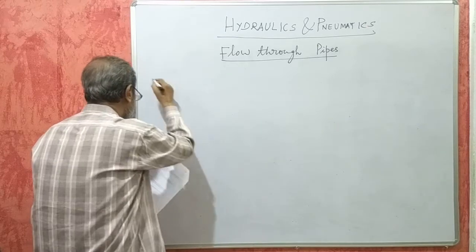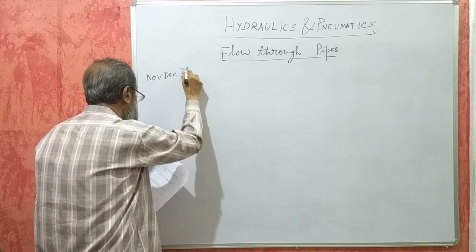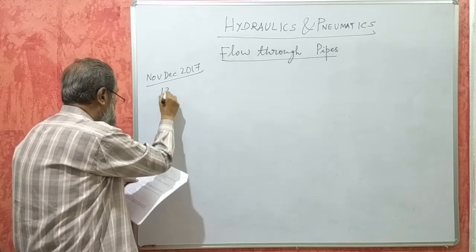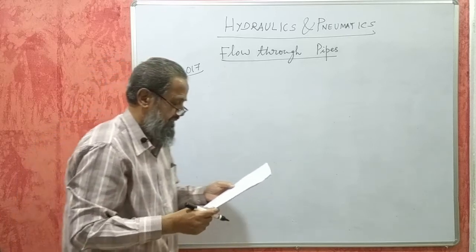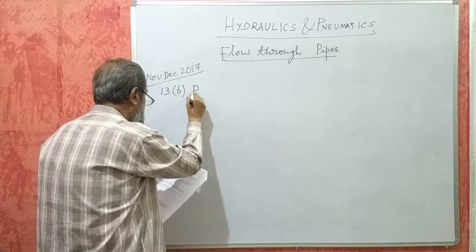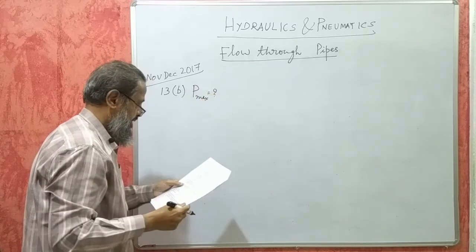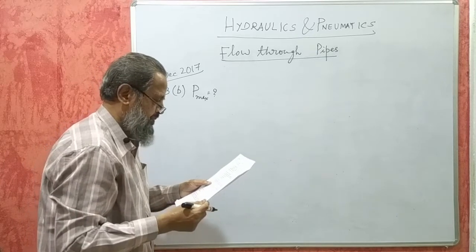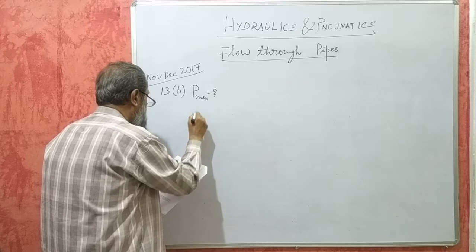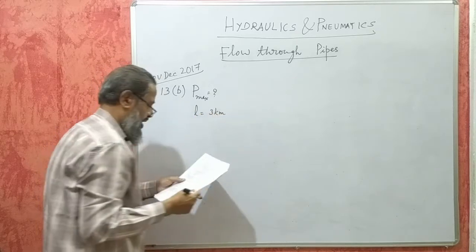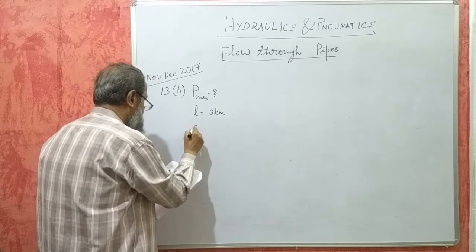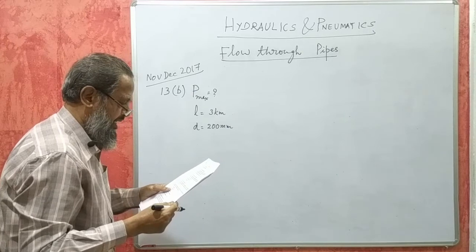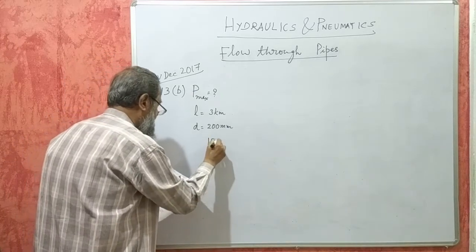From the November-December 2017 question paper, problem number 13b: find the maximum power transmitted by a pipe to a power station. The pipe is 3 kilometers long and 200 mm in diameter. The pressure of water in the power station is 1500 kPa.